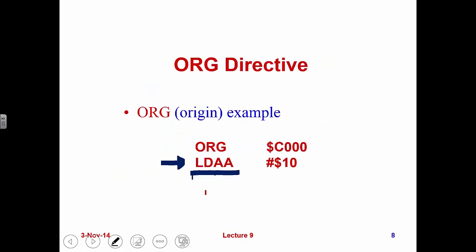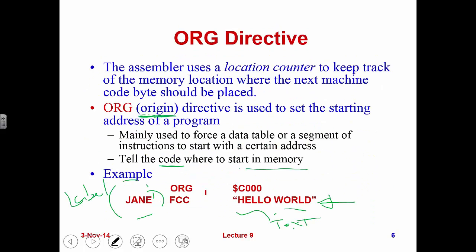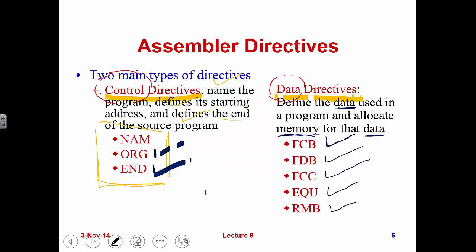That's pretty much about the control directives. We will come back to revisit NAM when we have an example. Now let's go to the directives defined for data. I mentioned the memory data and allocators — let's start from RMB.